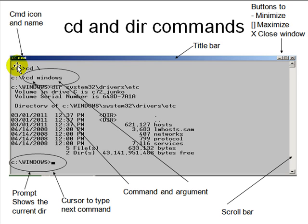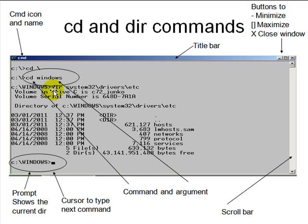At the prompt you can type in commands. A command consists of a command name and options or arguments. For example, 'CD \' — CD is the command and backslash is the argument — it changes the folder to the top-level folder. CD Windows takes you to the Windows directory, and DIR shows you its contents: system32, drivers, etc.